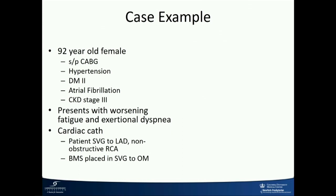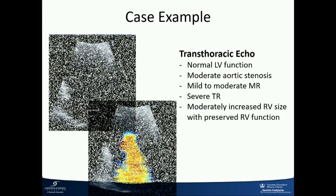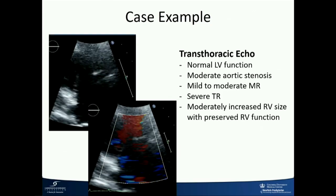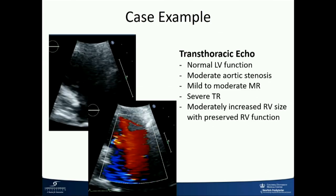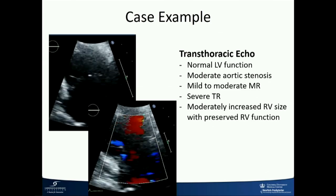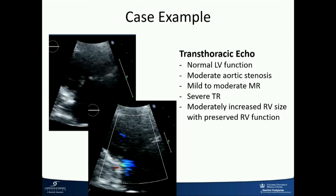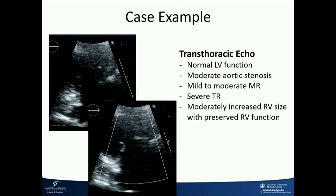I'm going to show you a case example from Columbia. This is a 92-year-old female patient. These are the typical tricuspid patients we get at present—she has some comorbidities, but is essentially very elderly yet pretty active. She has patent grafts with some prior intervention done on them. Surprisingly, her LV function was reasonable, and RV function was also reasonable, which is quite important. She has severe TR and minor disease in the other valves.